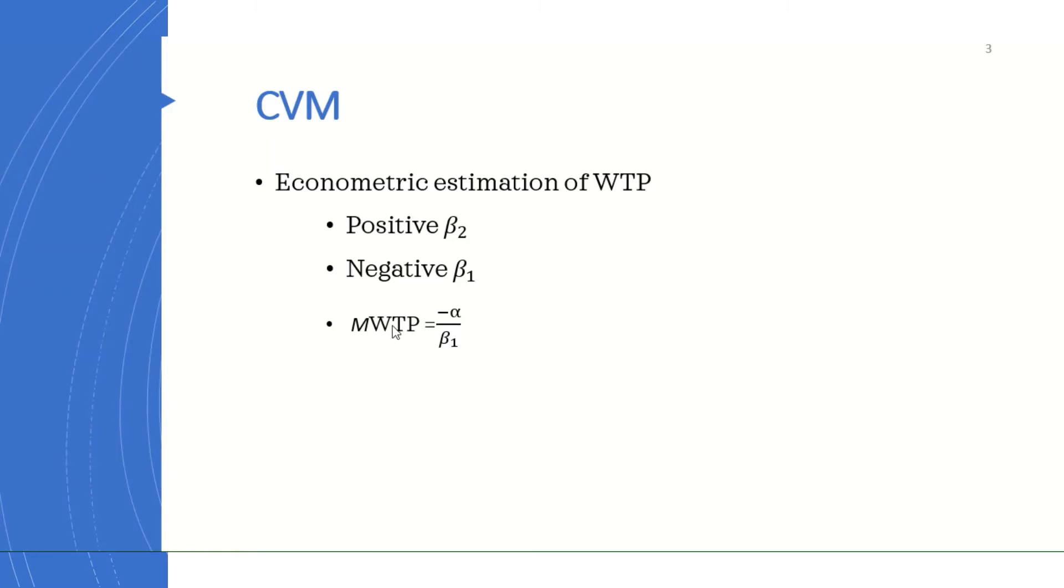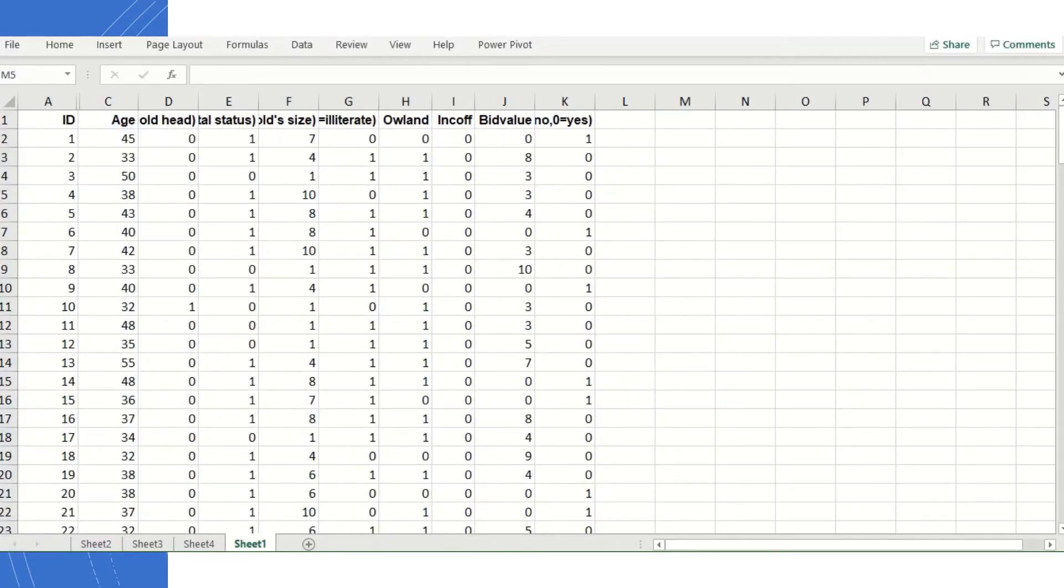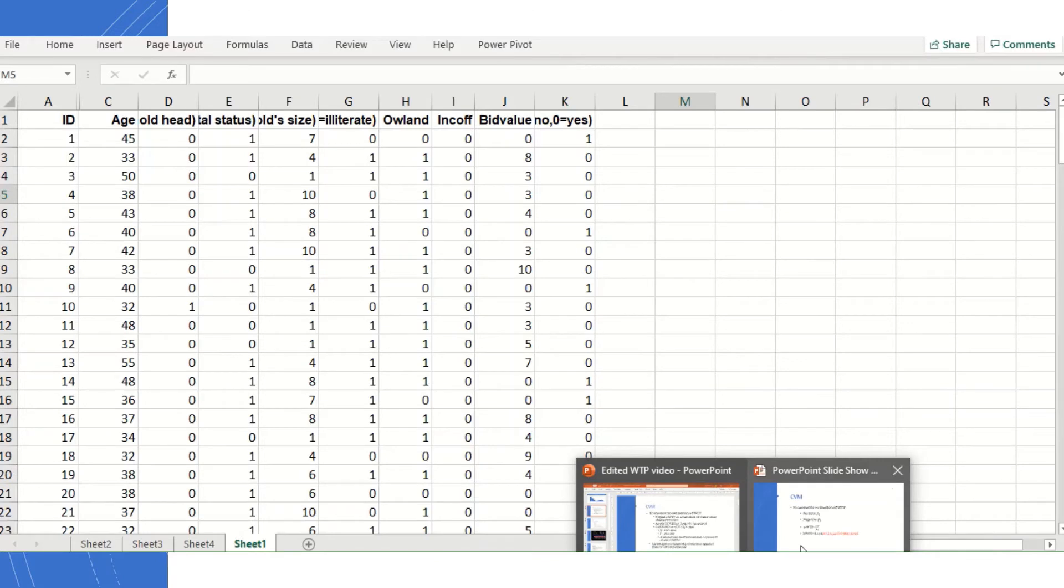This is a formula we can use for calculating willingness to pay when applying contingent valuation. Using the data I already showed you, which is this one, I will include the link for accessing this data in the video description.